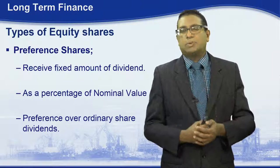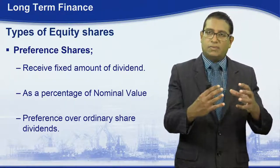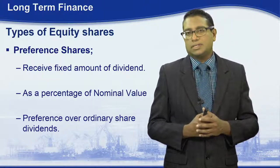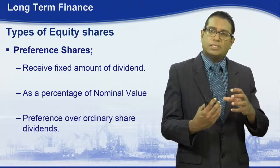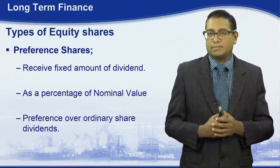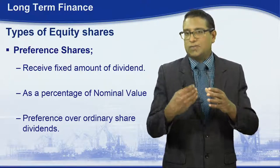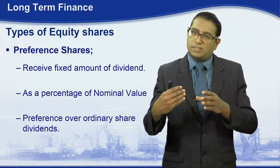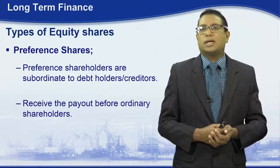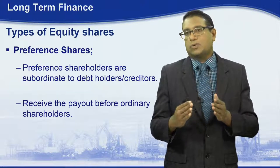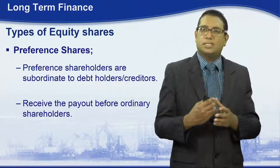Now let us look at preference shares. Preference shareholders basically receive a fixed amount of dividend. This dividend amount is based on a percentage of the nominal value of the share. Preference shares receive dividends with preference over ordinary share dividends. Furthermore, preference shareholders are subordinate to debt holders or creditors in a liquidation situation.